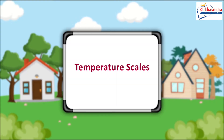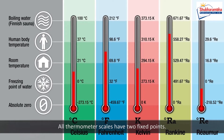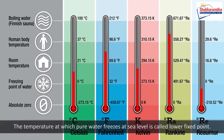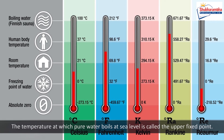All thermometer scales have two fixed points: the lower fixed point and the upper fixed point. The temperature at which pure water freezes at sea level is called the lower fixed point. The temperature at which pure water boils at sea level is called the upper fixed point.